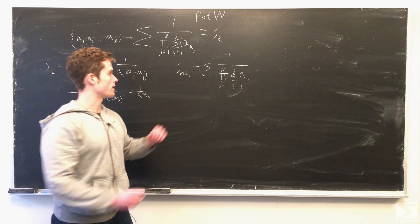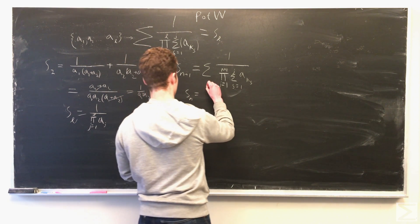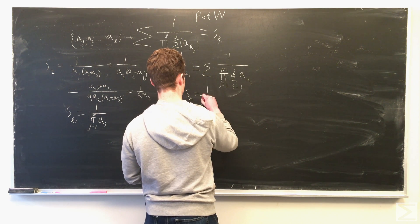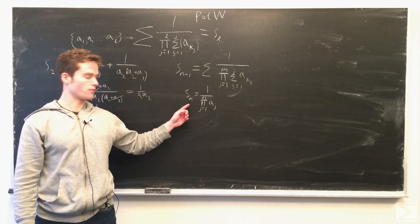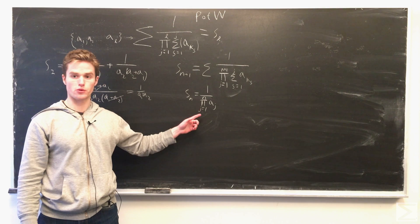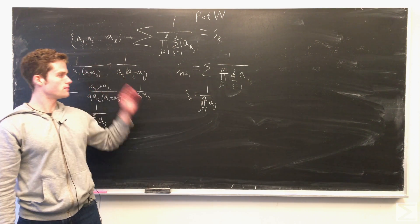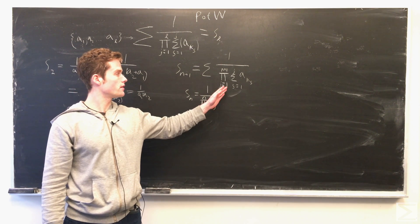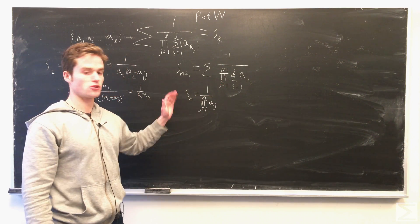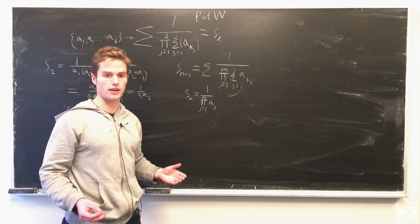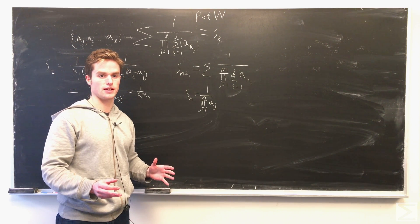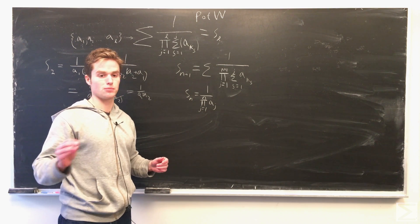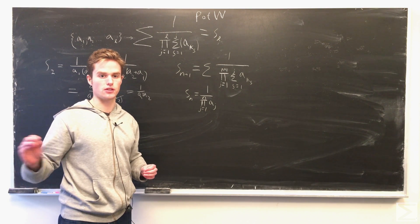We want to find this sum, given that the sum for N is just 1 over the product from 1 to N of all the A's. So now let's partition this sum into sets of permutations — one set where A_{k,N+1} equals A₁, another set where A_{k,N+1} equals A₂, and so forth.